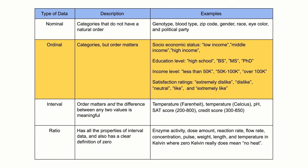Second, ordinal data, which also has categories, but the order of the categories matters. Examples include socioeconomic status with categories low, middle, and high income; education level with categories high school, BS, MS, and PhD; income level with categories less than 50K, 50 to 100K, and over 100K; and satisfaction rating with categories extremely dislike, dislike, neutral, like, and extremely like.